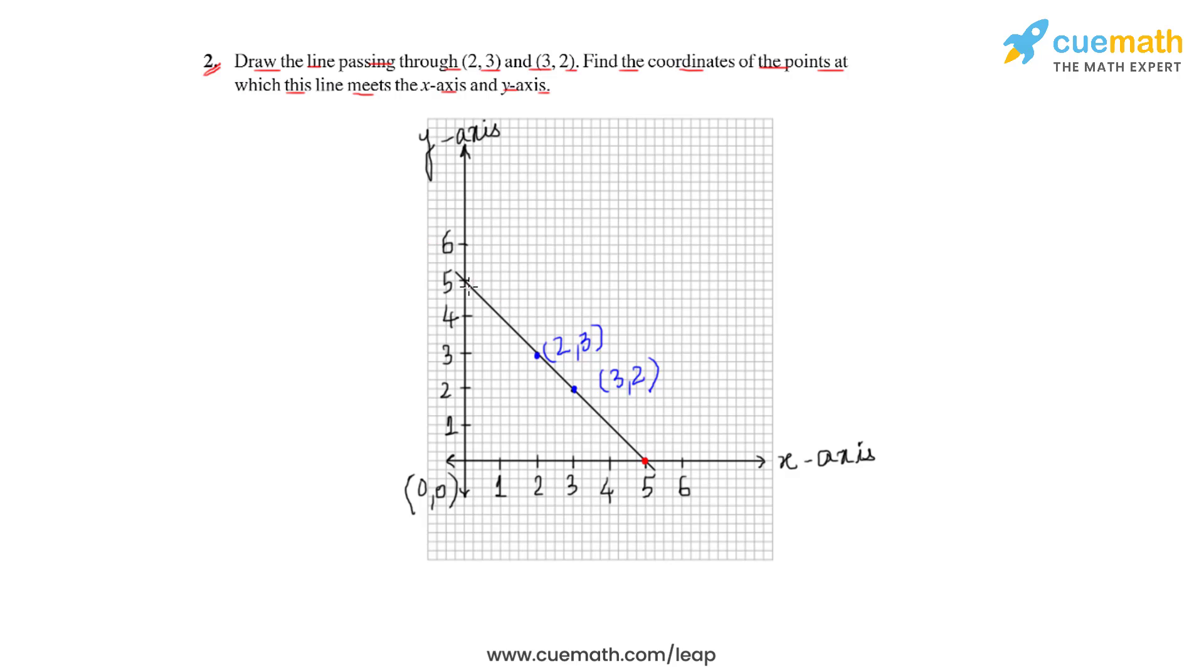Hence, to write the coordinates, we can see that the point of intersection on the x-axis would be (5,0), because it's a point on the x-axis, the value of y would be zero.